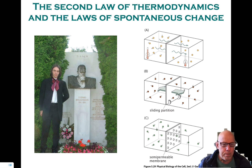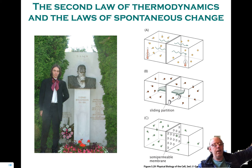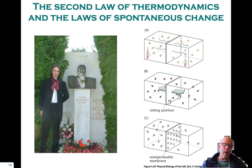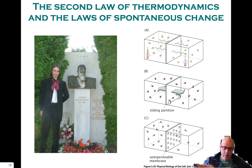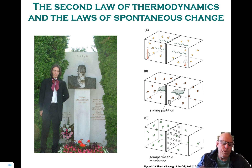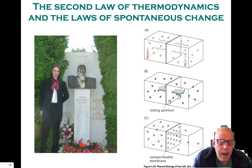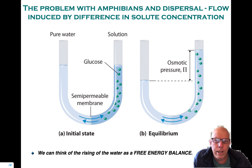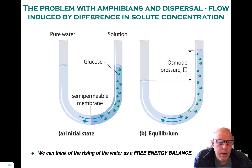I could contrive that by preparing the system artificially with all the molecules on the right-hand side, and then the second law says the system will continue to change until it reaches the most probable state — a state of uniform distribution. Anything other than that is lower probability. Entropy measures that, so the highest probability corresponds to the maximum in the entropy.